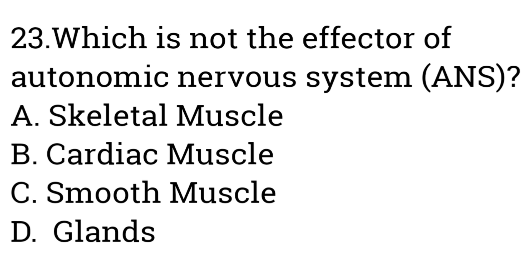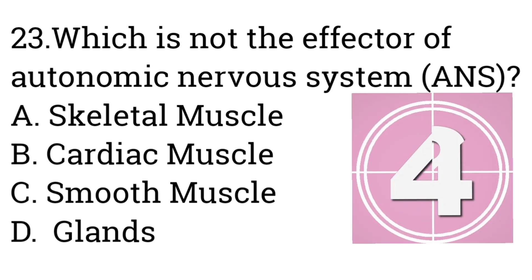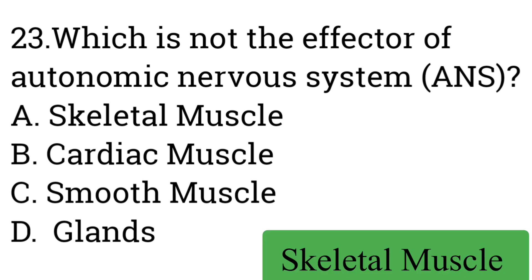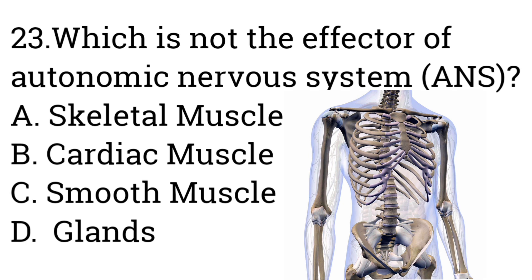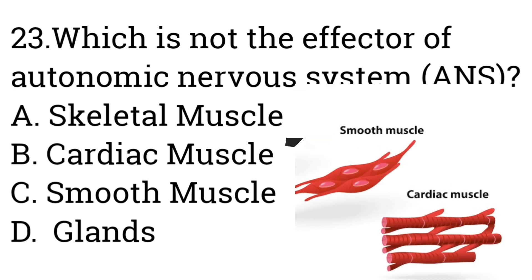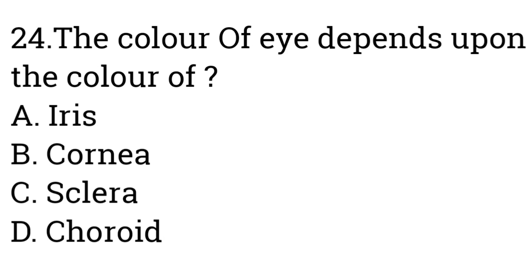Question number twenty-three: Which is NOT an effector of the autonomic nervous system? Option A: Skeletal muscle, B: Cardiac muscle, C: Smooth muscle, D: Glands. Answer is Skeletal muscle. The skeletal system is controlled by the somatic nervous system, whereas cardiac muscle, smooth muscle, and glands are effectors of the autonomic nervous system under involuntary control.